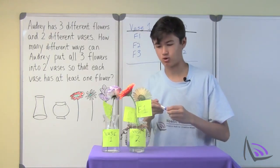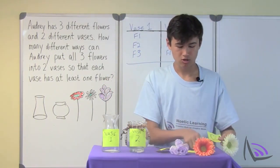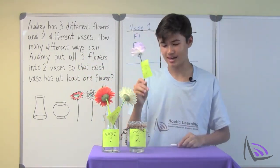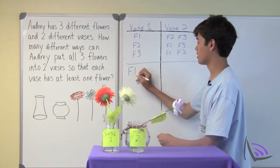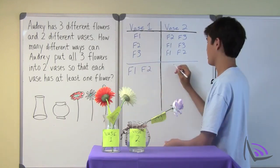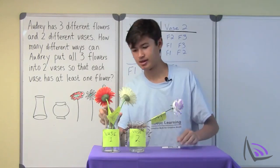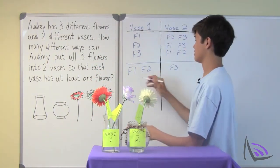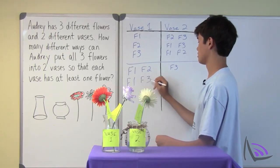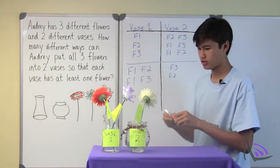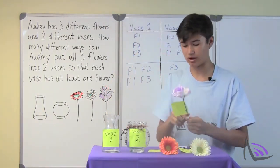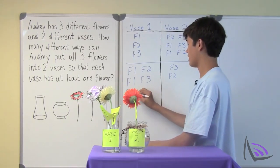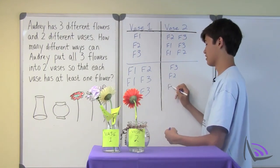Now let's try two flowers in vase one. We can put F1 and F2 in vase one and F3 in vase two. Then F1 and F3 in vase one and F2 in vase two. And lastly, F2 and F3 in vase one and F1 in vase two.